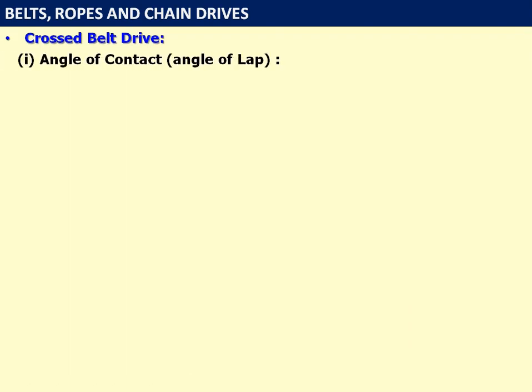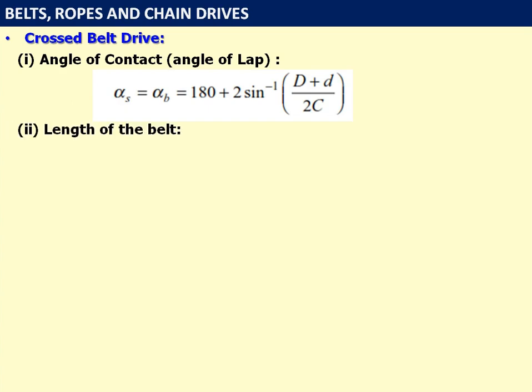Length of the belt for open belt drive is: L = 2C + π(D + d)/2 + (D − d)² / 4C. For cross belt drive, the angle of contact for both smaller and bigger pulley is the same and equals 180 plus 2 × sin⁻¹((D + d) / 2C). Length of the belt is: L = 2C + π(D + d)/2 + (D + d)² / 4C. Note the difference: open belt drive has a minus sign, while cross belt drive has a plus sign in the last term.